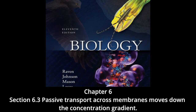Section 6.3: passive transport across membranes moves down the concentration gradient. Diffusion: molecules and ions dissolved in water are in constant random motion, causing net movement from regions of high concentration to regions of lower concentration — a process called diffusion. Net movement driven by diffusion continues until concentrations in all regions are equal. A jar of ink placed in a bucket of water demonstrates this: ink molecules slowly diffuse out until a uniform concentration is reached throughout.